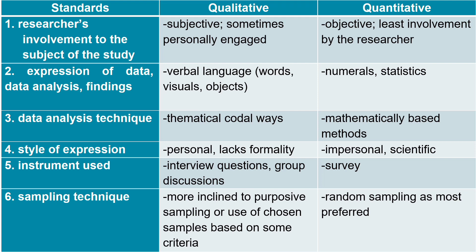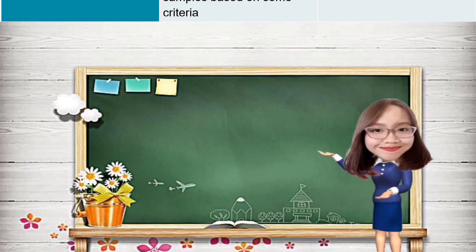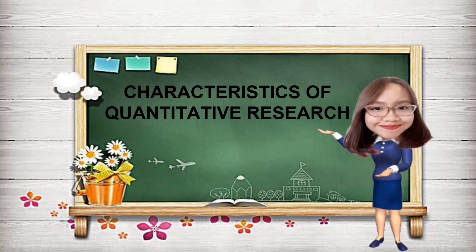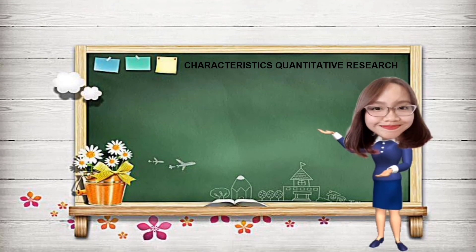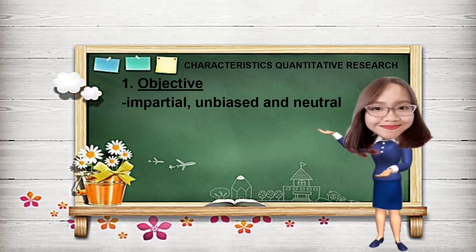Based on the comparison between quantitative and qualitative research, let us now discuss the characteristics of quantitative research. Number 1: Objective. Objectivity implies that quantitative research is unbiased and neutral. Quantitative research seeks accurate measurement and analysis of target concepts — it is not based on mere intuition and guesses. Data are gathered before proposing a conclusion or solution to a problem.